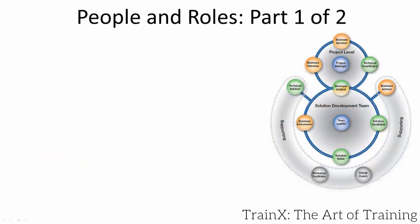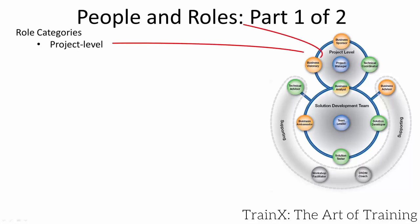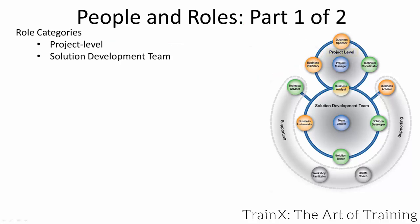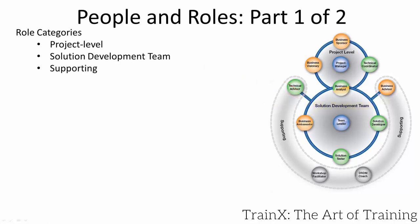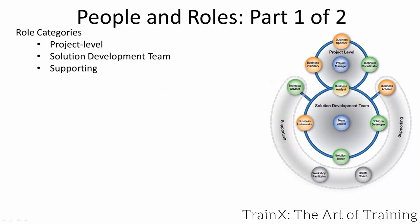Agile projects have three categories. Project level is where the high-level decisions are made. Solution development team is where the deliverables are created. Supporting is for additional advice and Agile PM process guidance. We'll look at the project level now, then look at the other categories as we learn more.